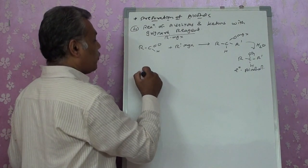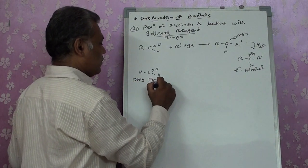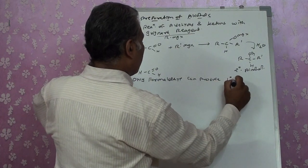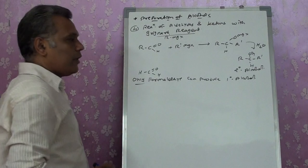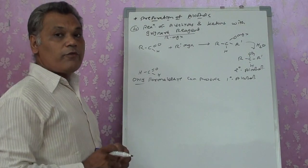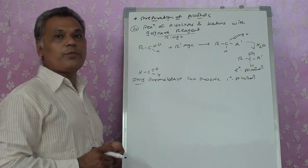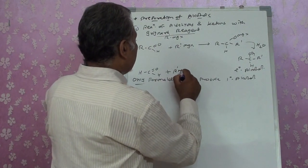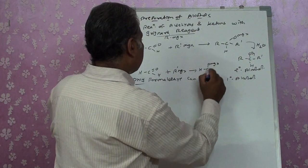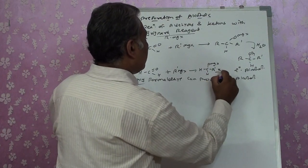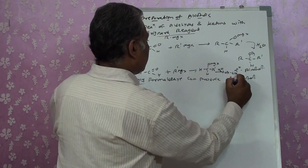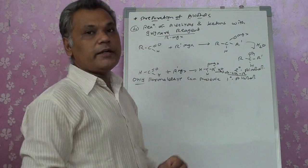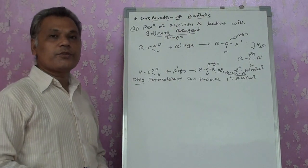Only formaldehyde (HCHO) can produce a primary alcohol with a Grignard reagent. Any other aldehyde with Grignard reagent produces a secondary alcohol. To produce a primary alcohol from other aldehydes, we must use reduction (LiAlH₄). With formaldehyde and R'MgX, after hydrolysis, we get R'CH₂OH — a primary alcohol.